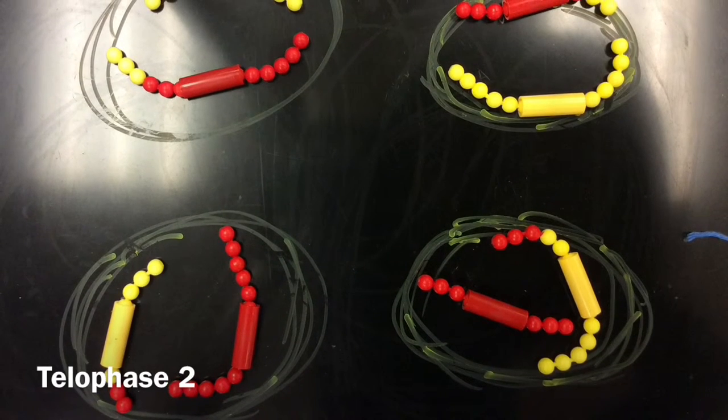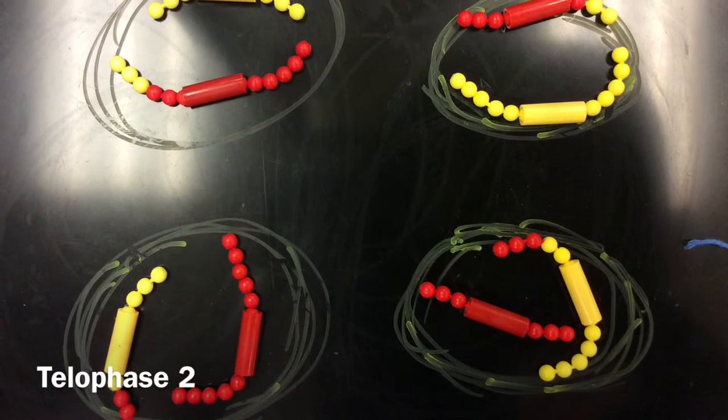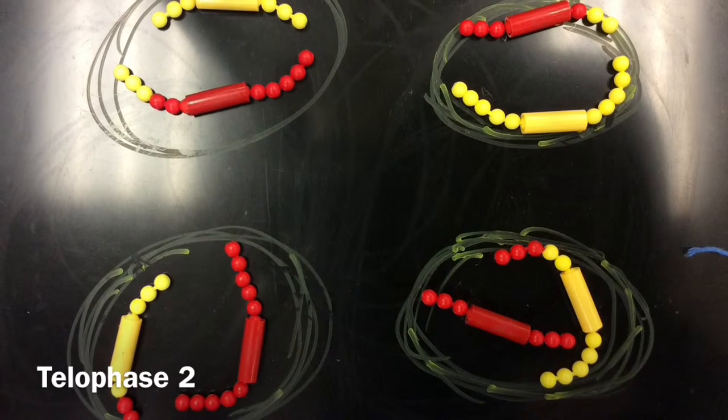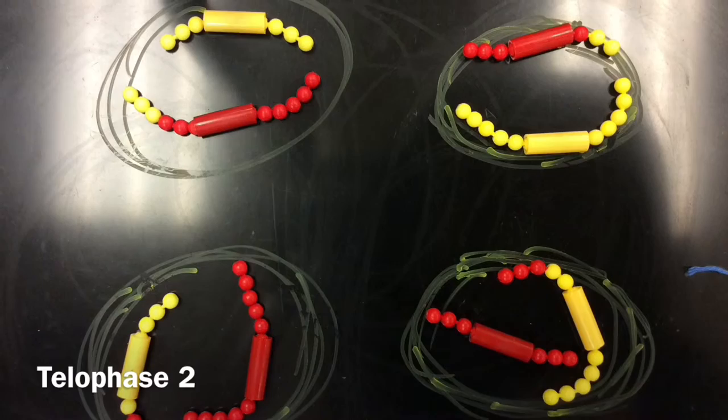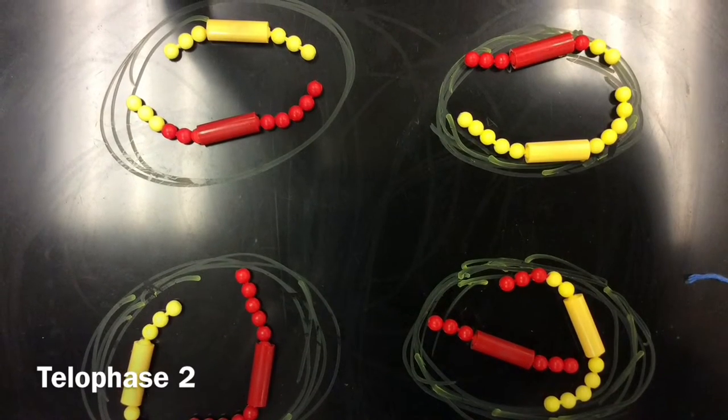In telophase II, the chromosomes unwind into chromatin and the nuclear reforms. The cytoplasm divides and produces four genetically different haploid cells.